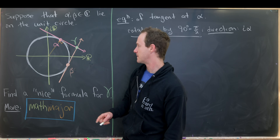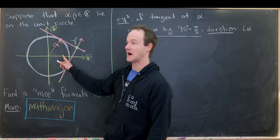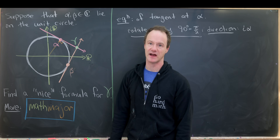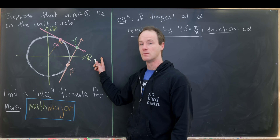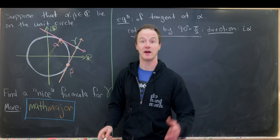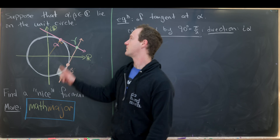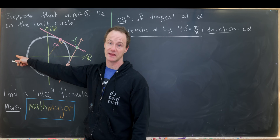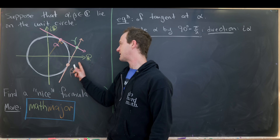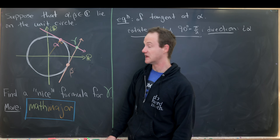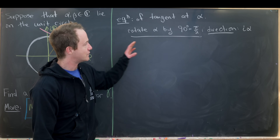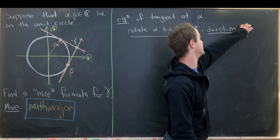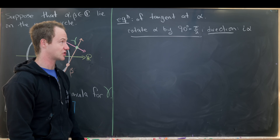We can verify this: multiplying any real number by i gives a pure imaginary number, rotating it from the real axis to the imaginary axis. For example, 3 multiplied by i gives 3i — a 90° rotation — and 3i times i gives −3, another 90° rotation. This works anywhere in the complex plane. So we have both a point alpha and a direction i·alpha on the tangent line, meaning we can parametrize it.